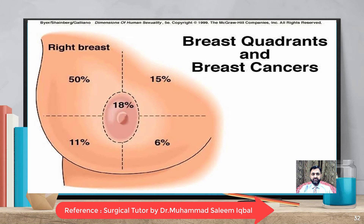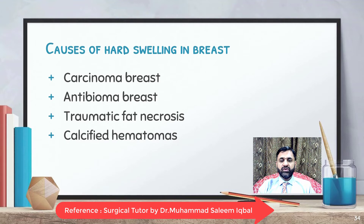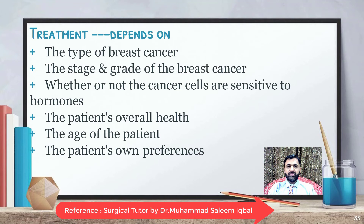Breast cancer is most common in the upper outer quadrant of the breast because most glandular tissue lies in this area. The differential diagnosis of carcinoma breast includes fibrosis, traumatic fat necrosis, tuberculosis of the breast, mastitis, antibioma, galactocele, and cystosarcoma phylloides. Causes of hard swelling in the breast include carcinoma breast, antibioma breast, traumatic fat necrosis, and calcified hematomas.